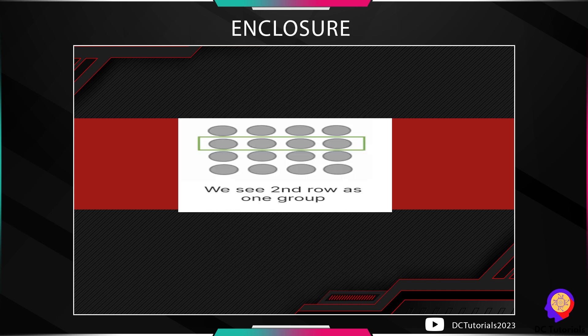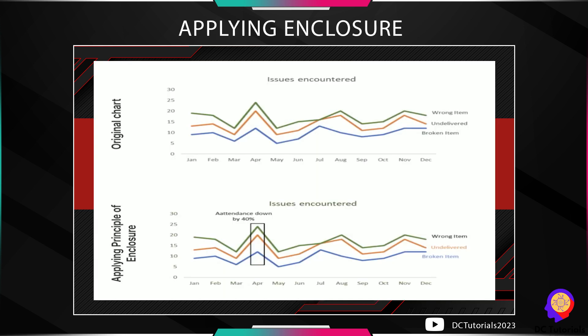Next, we have the principle of enclosure — we tend to group things together when they are enclosed in a space. Without a green box, a block of dots is perceived as one group, but when we enclose the second row with the green box, that row is seen as a separate group. Applying this to our chart by boxing the April data, our attention is drawn easily to the boxed information, and adding insights there will lead the audience to where you want them to focus.